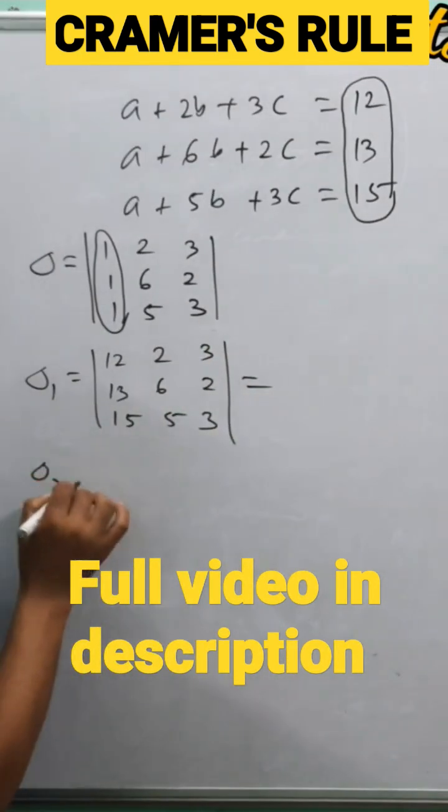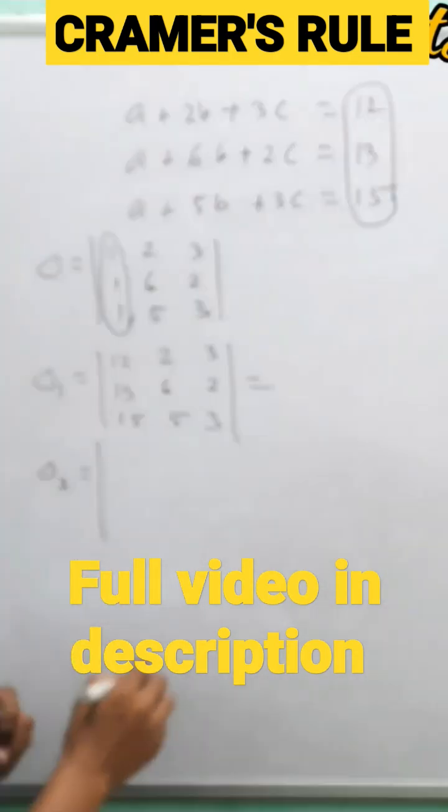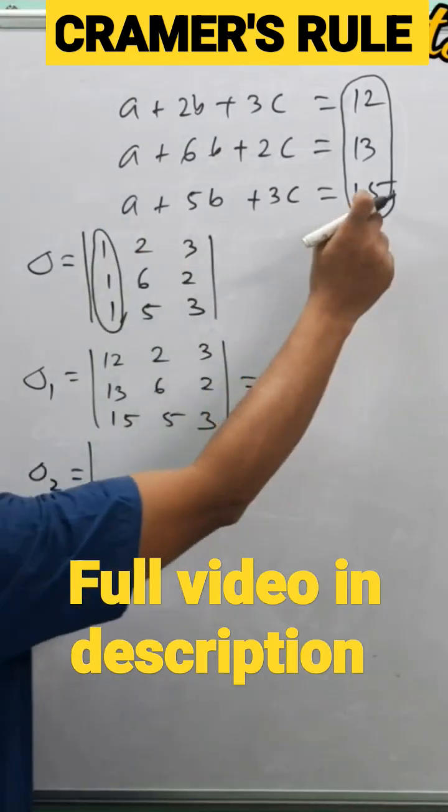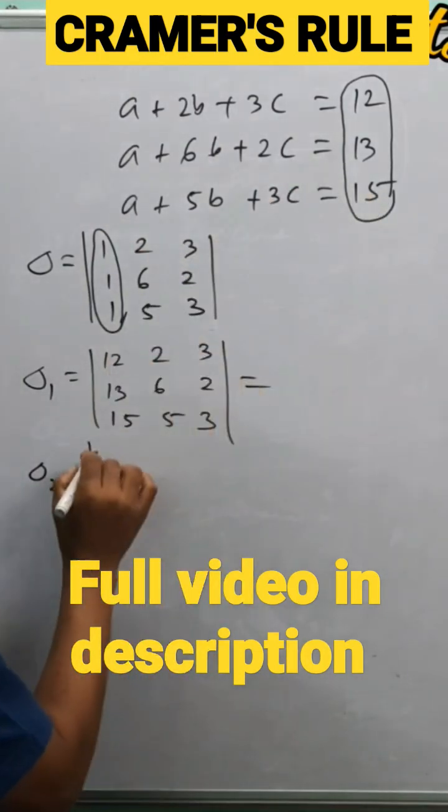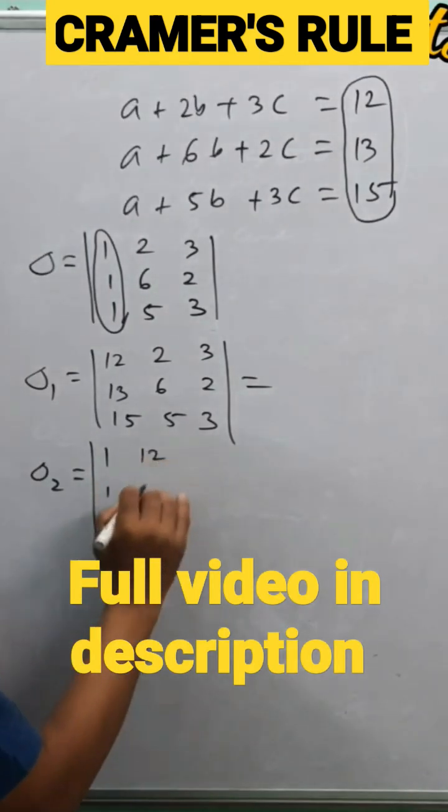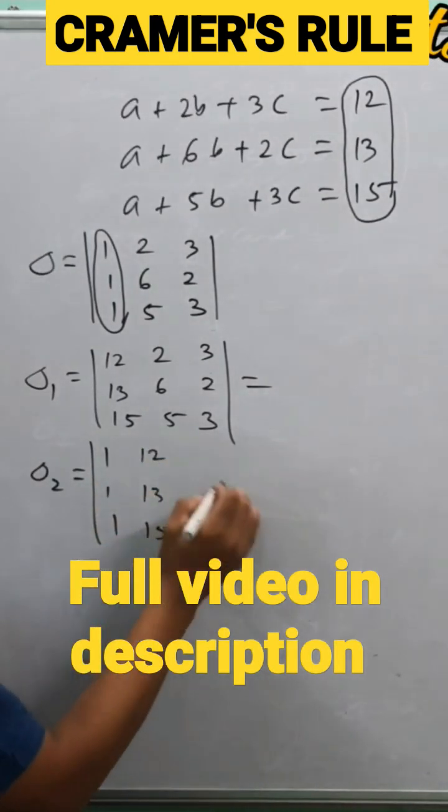Similarly, we can find delta 2. For delta 2, the second column of this will be replaced by this column. That means the first column: one, one, one as it is, but the second column is coming 12, 13, 15.